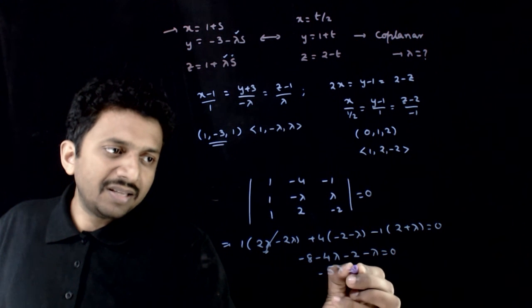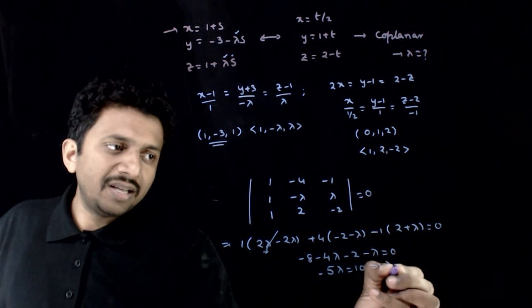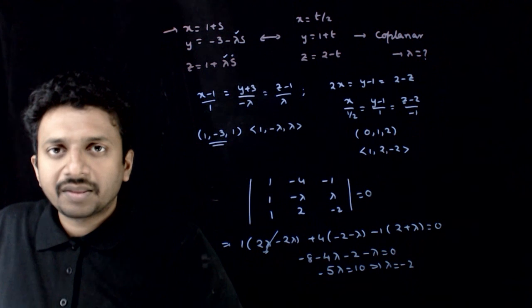Minus 5 lambda is equal to 10. Lambda is equal to minus 2. Thank you.